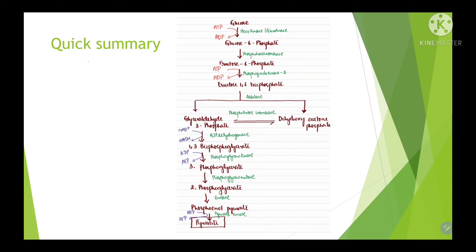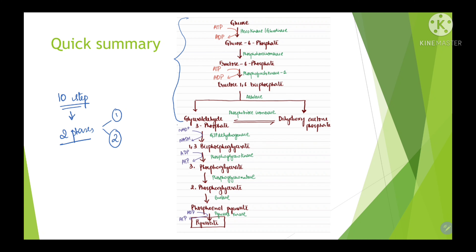Going through a quick summary of glycolysis: glycolysis is a 10-step procedure divided into 2 phases. Phase 1 is the energy-consuming phase (steps 1 to 5) and Phase 2 is the energy-producing phase (steps 6 to 10). In Phase 1, 1 ATP molecule is consumed in reaction 1 and 1 ATP molecule in reaction 3, which is why it is called the energy-consuming or preparatory phase.